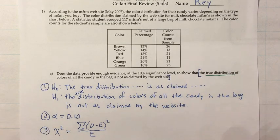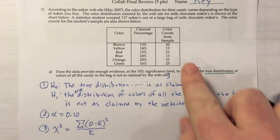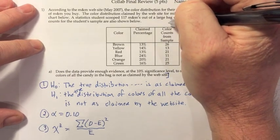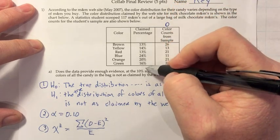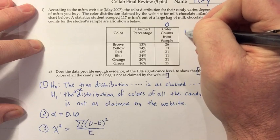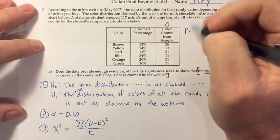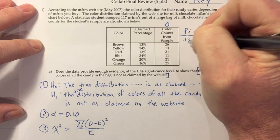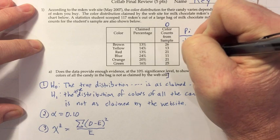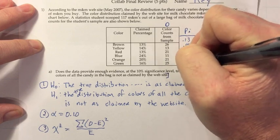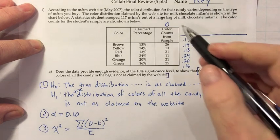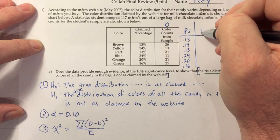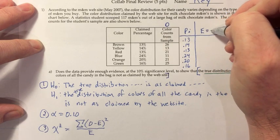I'm going to use the existing table as a head start. This column represents the observed values O. These percentages are the pi values — the decimal versions: 0.13, 0.14, 0.13, 0.24, 0.20, 0.16. Now we need the expected frequencies, which are n times pi. We use those percentages because we're supposed to use the claimed percentages that would apply if H0 is true. H0 says the distribution is as claimed by the website, so I'm converting those percentages to decimals.